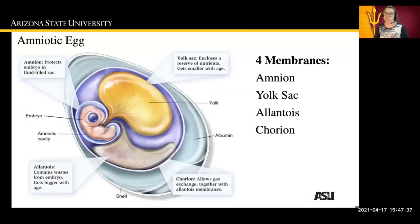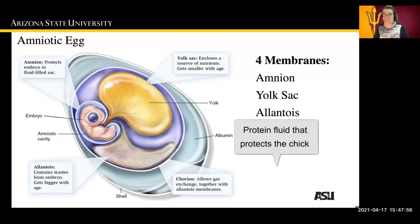There's a chorion, which allows gas exchange across the allantoid membrane. There's a yolk sac, which encloses a reserve of nutrients and gets smaller as the embryo gets older. There's also albumin, which is like the white part of the egg, and the egg shell.